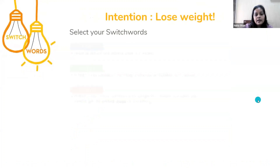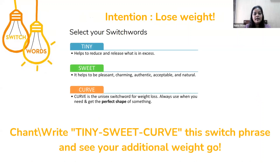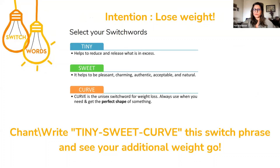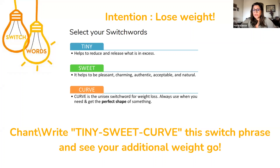For somebody who wants to lose weight, they can set an example — hi universe, or whoever you relate to, whichever god you relate to — hi, I am setting intention to lose weight. And then you just start chanting: tiny sweet curve, tiny sweet curve, tiny sweet curve. Or if you're good at writing, you can write it. There are many ways to use it which we cover in the workshop, but a simple and easy one is to chant and write. This works for both men and women.